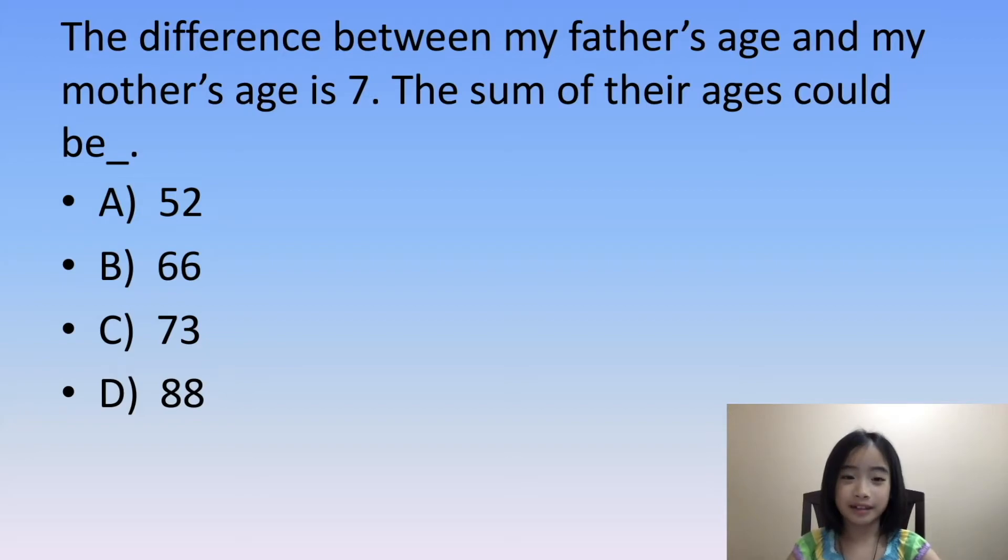So one of their ages must be an odd number and the other must be an even number. So the sum of their ages must be an odd number.